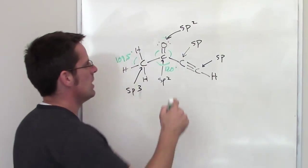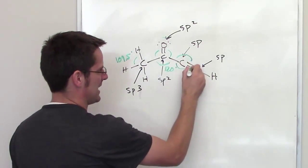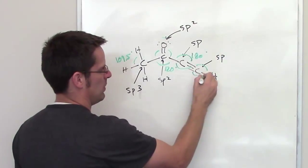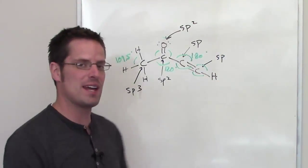Around the sp hybridized centers, that actually is 180 - a straight line around both of them - because the geometry around that is totally linear.